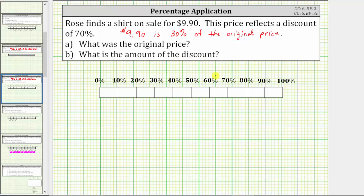And now we'll write the corresponding dollar amounts below the tape. And because we know $9.90 is 30% of the original price, we can record $9.90 below 30%.